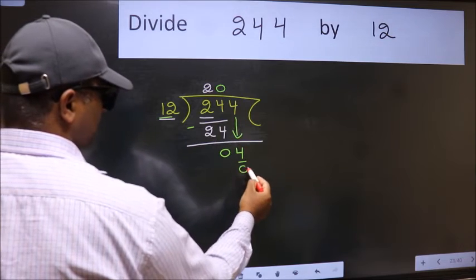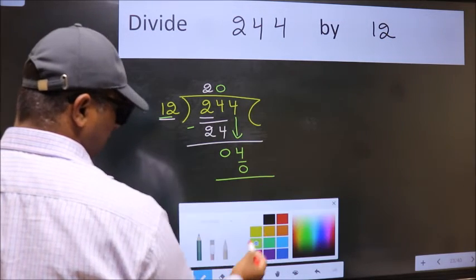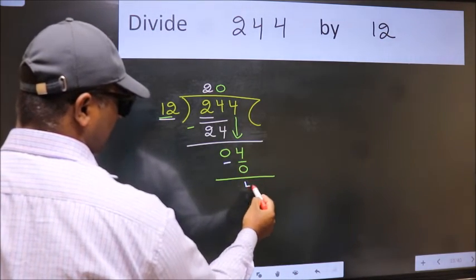So 12 into 0, 0. Now we subtract. We get 4.